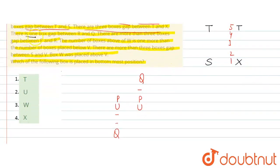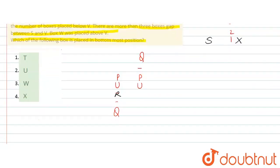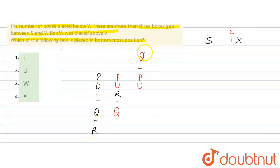It is given there is one box gap between R and Q. So here is Q, and R can come here. Another possibility: P, U, then blank, then Q, then blank, then R. In this case, the gap between Q and R is one box — this is the only valid possibility.